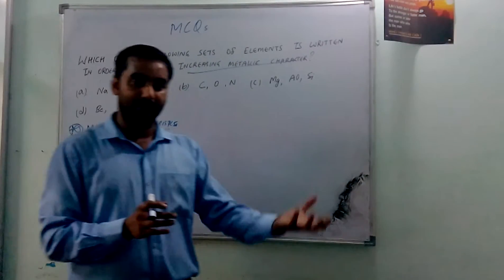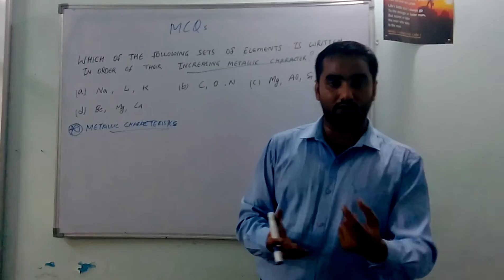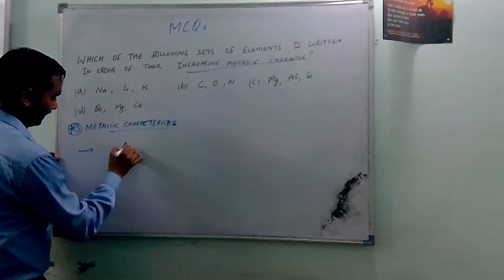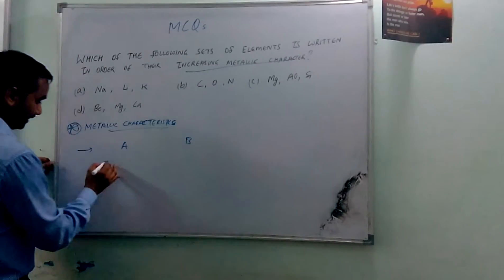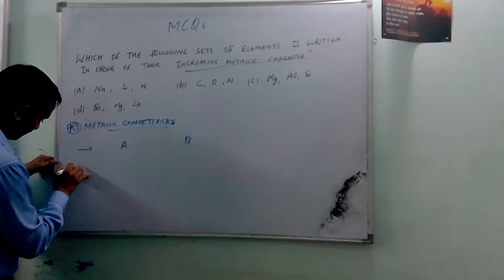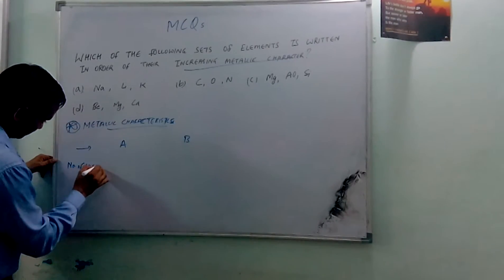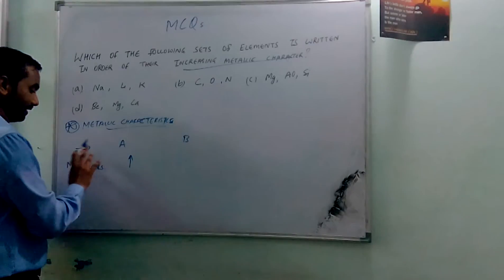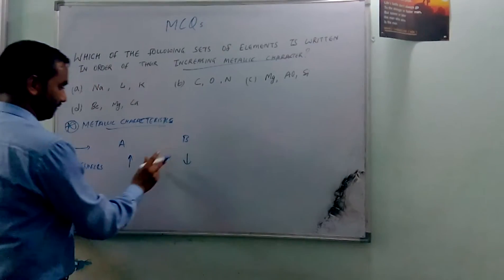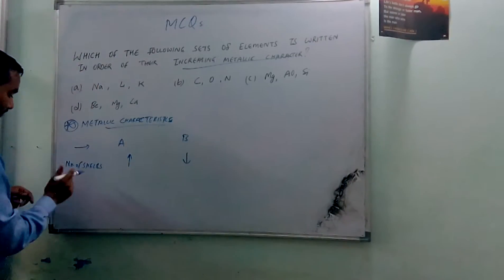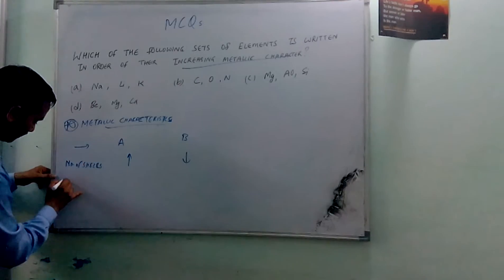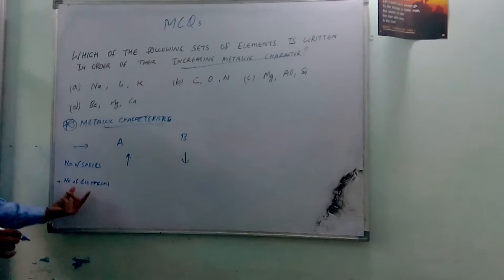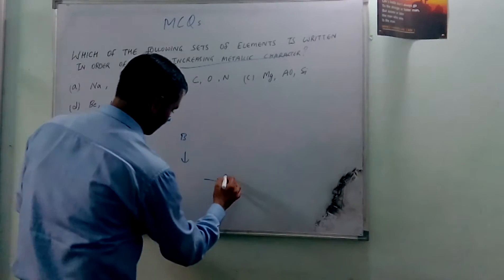For metallic character to be high, the number of shells should be maximum and the number of electrons in the outermost shell should be minimum. If A and B are two elements, and A has a higher number of shells, it has a higher metallic character than B which has a lower number of shells.